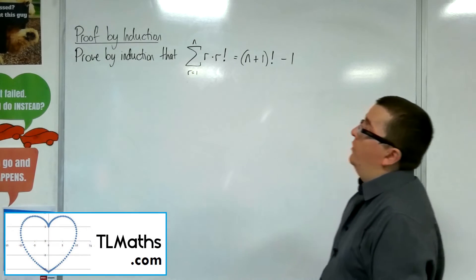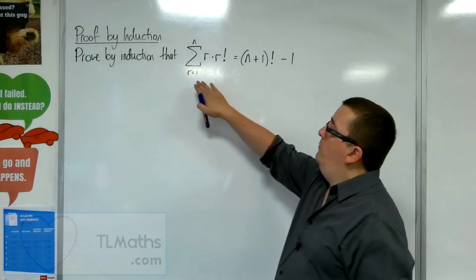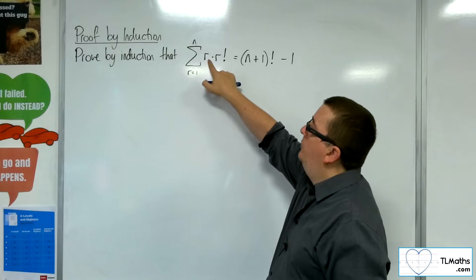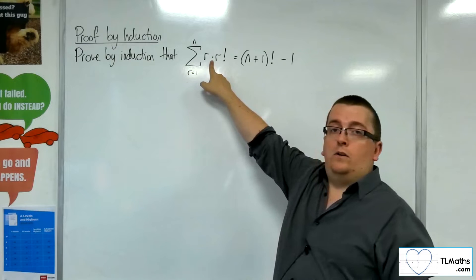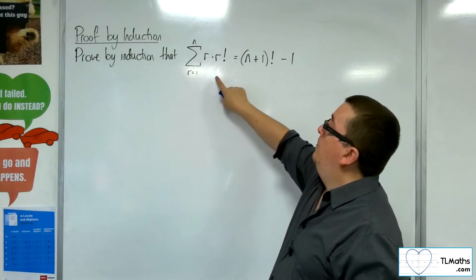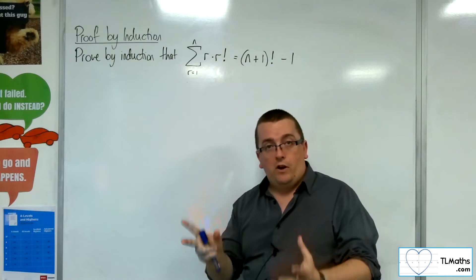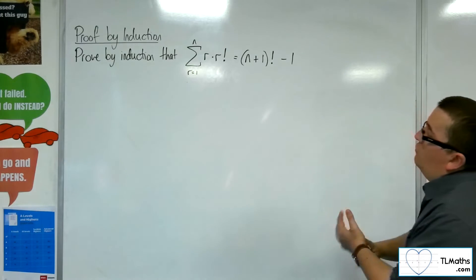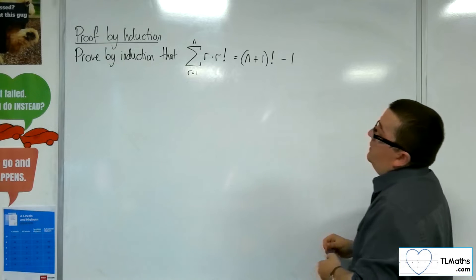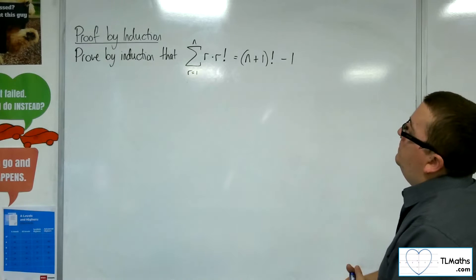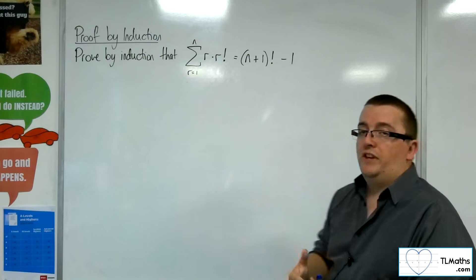In this video we've got to prove by induction that the sum from R equals 1 to N of R times R factorial equals N plus 1 factorial, take away 1. The dot here means times — a dot is often used to mean multiplication rather than the regular times sign.